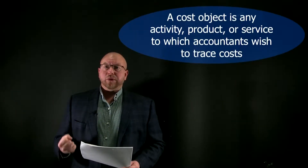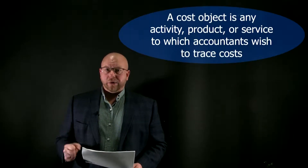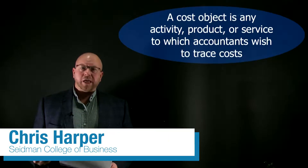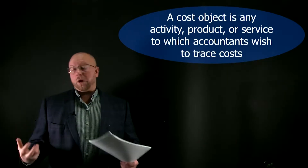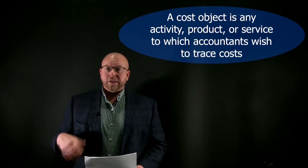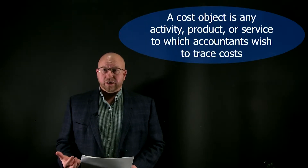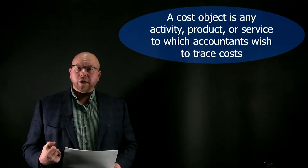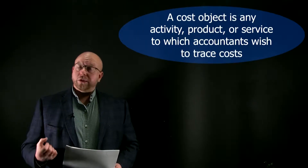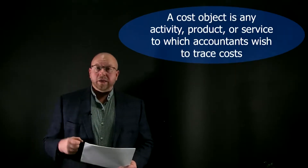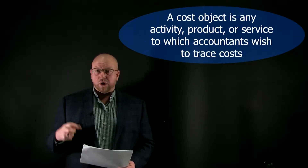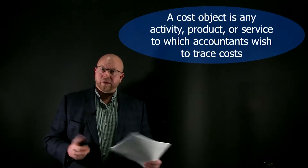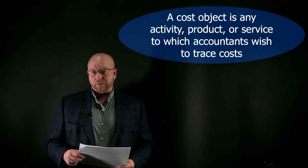One of the fundamental things that we try to accomplish with managerial accounting is to figure out what something costs. That cost object could be an activity, could be a product, could be a service. Think about a building that's being constructed. The construction company certainly is going to want to know how much it costs to build that building — to determine if they made a profit, and when they build other buildings in the future, they'll want to know what those historical costs were so they can figure out how to price future construction projects.